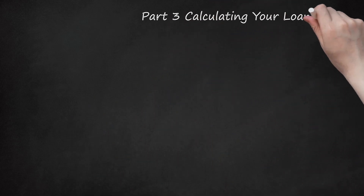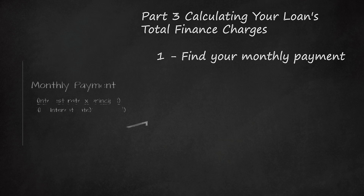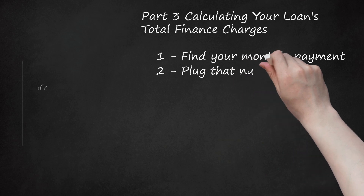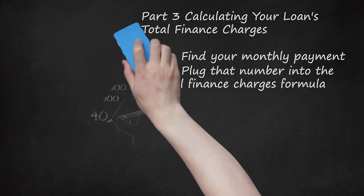Part 3: Calculating Your Loan's Total Finance Charges. Step 1: Find your monthly payment, as explained in the previous section. Step 2: Plug that number into the total finance charges formula: (monthly payment amount × number of payments) − amount borrowed = total finance charges. In our example: ($409 × 60) − $20,000 = total finance charges. $24,540 − $20,000 = $4,540. The total amount of finance charges equals $4,540.